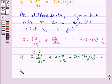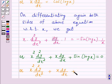Or, this can be written as x square into d2y over dx square plus x dy by dx plus, now y is equal to sin of log x.